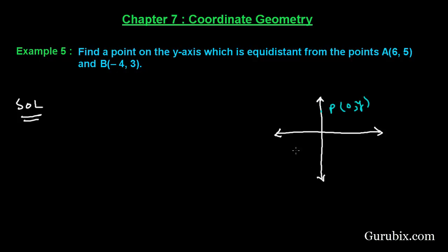Here we have point B whose coordinates are (-4, 3) and here we have point A whose coordinates are (6, 5). We are given that point P is equidistant from points A and B.